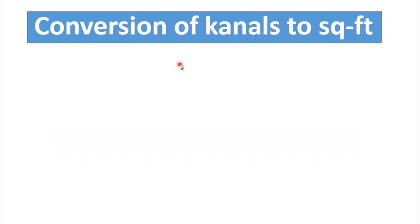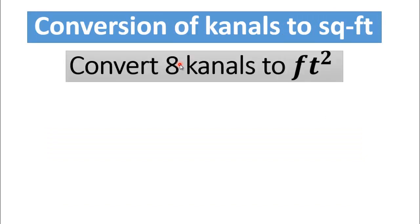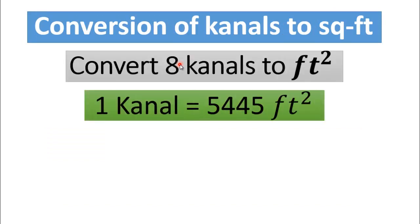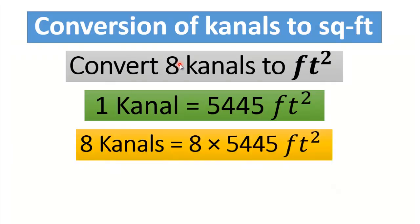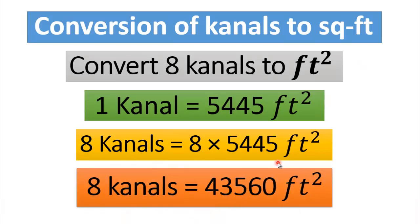Now, converting canals into square feet — convert 8 canals to square feet. We know that 1 canal is equal to 5,445 square feet. To convert 8 canals to square feet, multiply 8 by 5,445. After simple calculation, 8 canals is equal to 43,560 square feet. Remember, here we have used big Marla. If you are using small Marla, multiply 8 by 4,500 square feet.